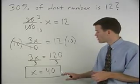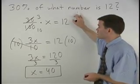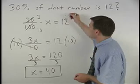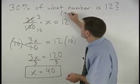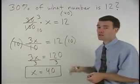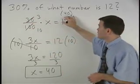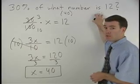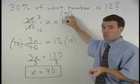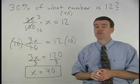Now let's check our answer back in the original problem to see if it makes sense. We have 30% of 40 is 12. Well, we know that 100% of 40 would be 40. So 30% of 40 should be a lot less than 40. So 12 seems to make sense.